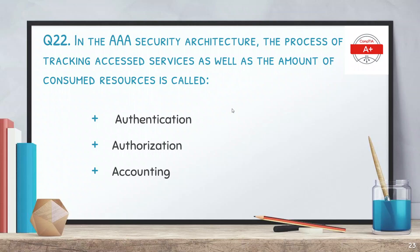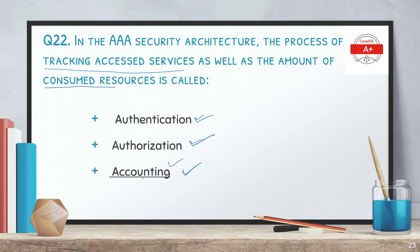Question 22: In the AAA security architecture, the process of tracking access services as well as the amount of consumed resources is called — authentication, authorization, or accounting? The correct answer is accounting. After authenticating and being authorized, your usage is tracked: which services you access, which type, and how much — this is all logged, and you are accounted for.